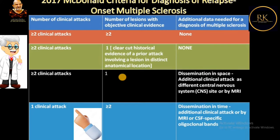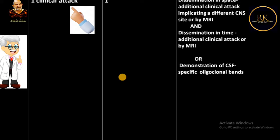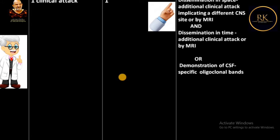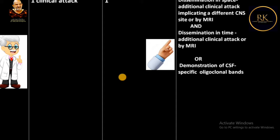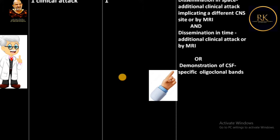If the patient has one clinical attack with one lesion showing objective clinical evidence, then we need two additional criteria: dissemination in space, demonstrated by additional clinical attacks implicating different CNS sites or by MRI, and dissemination in time, demonstrated by additional clinical attacks, MRI, or CSF-specific oligoclonal bands. In all these cases, we can make the diagnosis of relapse-onset multiple sclerosis.